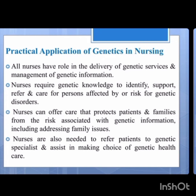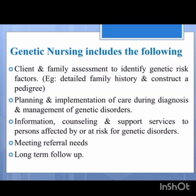For such patients, we have to refer them to genetic counseling doctors. The genetic nursing includes: client and family assessment to identify the genetic risk factors. For this, to know the genetic risk factors, we have to draw the pedigree of family members and also collect a detailed history to know if any family history of genetic disorders is there. Next: planning and implementation of care during diagnosis and management of genetic disorders.